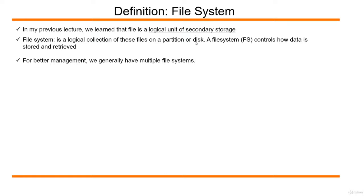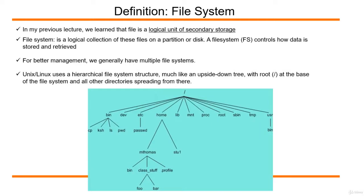For better management of data and end user experience, we generally have multiple file systems. Unix and Linux operating systems use a hierarchical file system structure, much like an upside-down tree, with root at the base represented by a forward slash, and all other directories spreading from there.